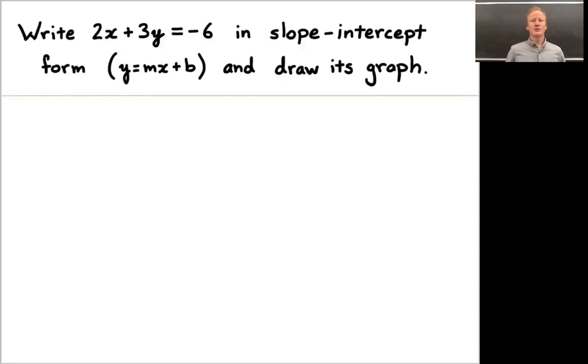Here is an equation, 2x plus 3y equals negative 6. You're asked to write it in slope-intercept form and then draw its graph. In parentheses there, I wrote how some people sometimes say slope-intercept form, y equals mx plus b, if that's more comfortable for you. So write the equation in that form, which is slope-intercept form, and then draw its graph. Go ahead and pause it here, and after you come up with a solution, unpause it and we'll talk about it together.